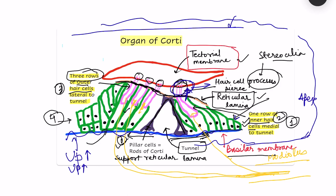The tectorial membrane is gel-like. With upward movement of the basilar membrane and hair cells, the stereocilia bend towards the medial side. When the basilar membrane moves down, the hair cells move down and outward towards the lateral side. This movement of the stereocilia is responsible for transduction, and the inner hair cells are the transducing cells.